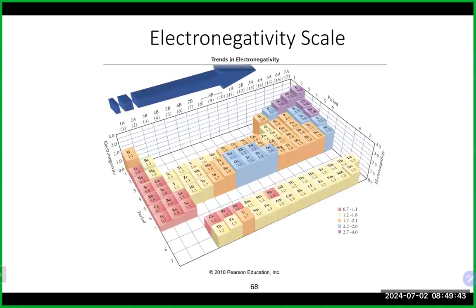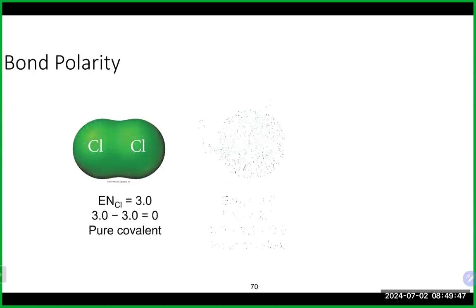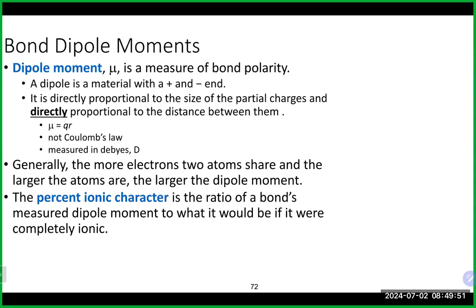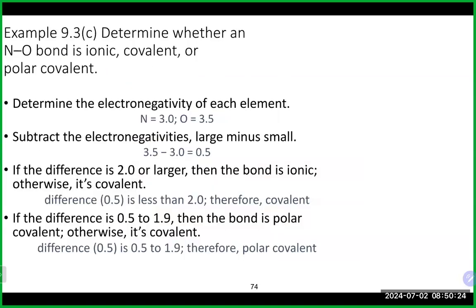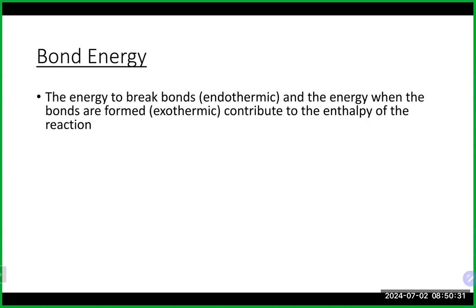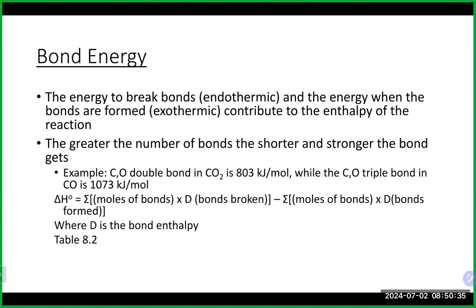We talked about electronegativity and bond polarity earlier. Bond polarity involves a difference in electronegativity that determines how electrons are shared between two atoms. If a molecule has a dipole moment, it means the molecule is polar overall. We'll discuss that more in the next chapter. Now let's talk about bond energy — the energy required to make and break bonds.